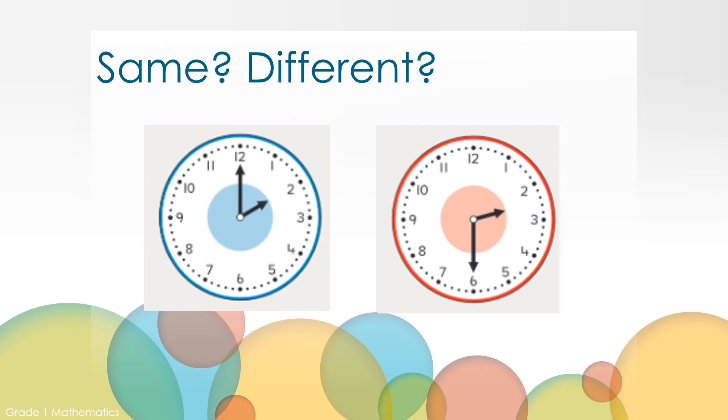Maybe you thought they were different because one clock is blue and one clock is red. Maybe you saw the blue clock has the minute hand pointing towards the 12 and the red clock has the minute hand pointing towards the 6.